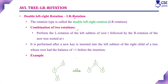The first type of double rotation is double left-right rotation, or LR rotation. It is a combination of two rotations: first we perform a left rotation of the left subtree, then followed by a right rotation of the new tree rooted at R. This rotation is required when you insert a new key into the left subtree of the right child of a tree whose root has a balance factor of +1 before insertion.